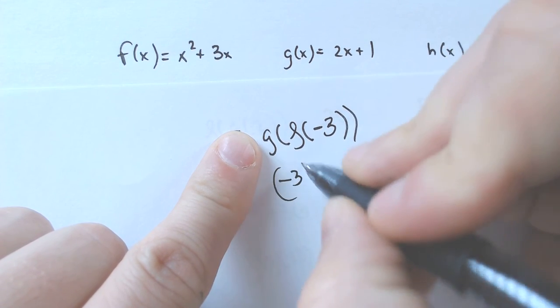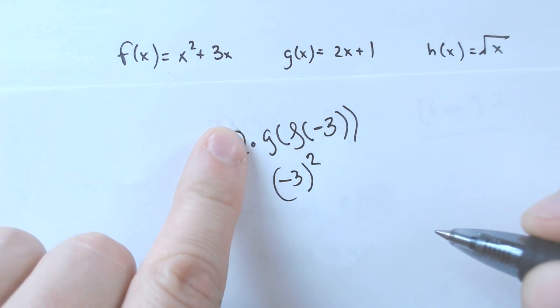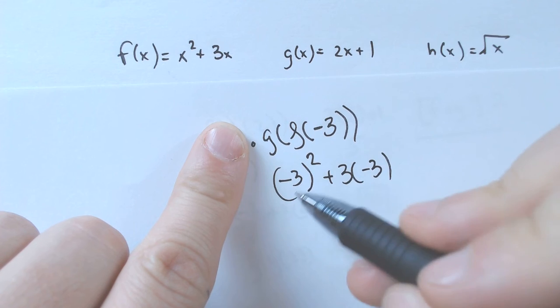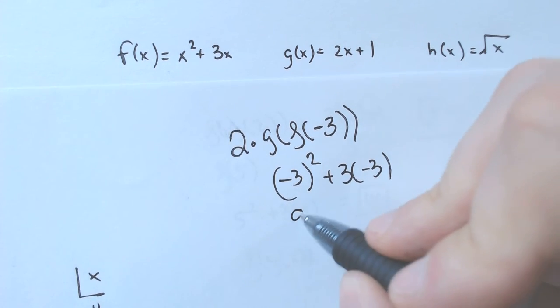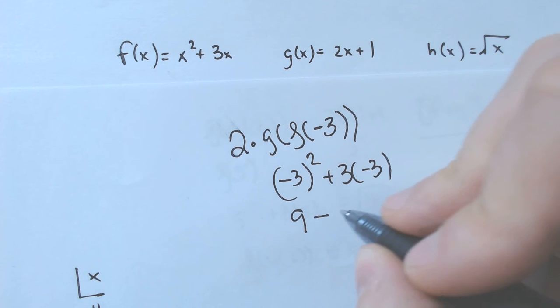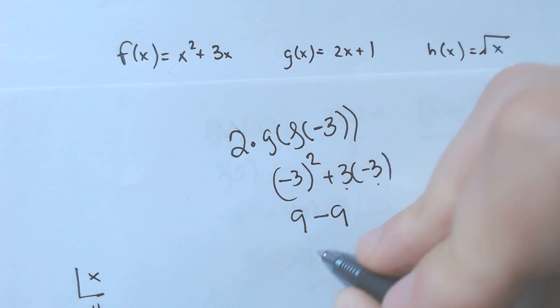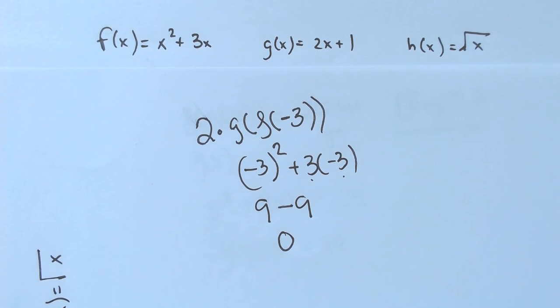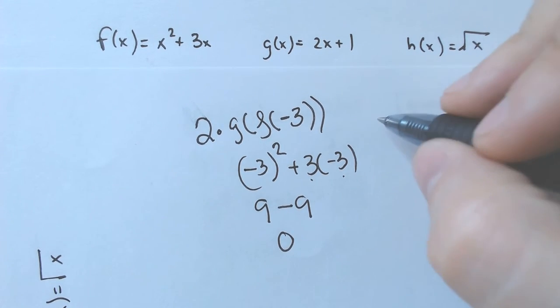So negative 3 squared, plug in the squared, 3 times negative 3. Negative 3 squared is 9, because that's negative 3 times negative 3, which is 9. And then 3 times negative 3 is negative 9, which is 0. So this is a very interesting problem, because it equals 0, which normally makes people panic. Oh, no. What happened? Not a big deal.